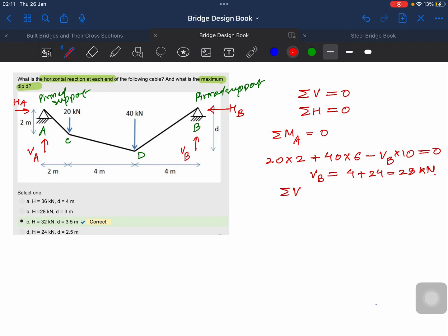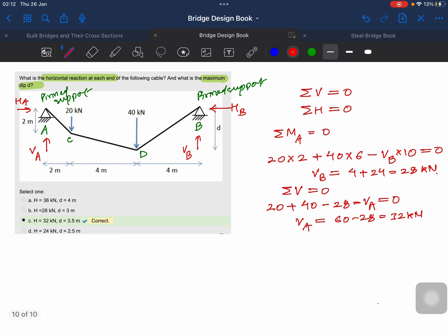We have the equation sum of vertical forces is zero, so that means 20 plus 40 minus 28 minus VA equals zero. So VA is 60 minus 28, which is 32. Now, in the beginning of this video I've shared that the movement in the entire cable is zero, and we have this important equation that sum of horizontal forces is zero in the entire structure, which implies that HA minus HB is zero, which means HA equals HB because we don't have any external load applied in this structure.